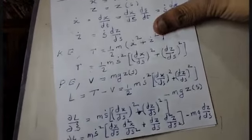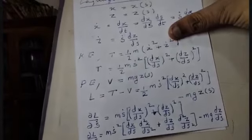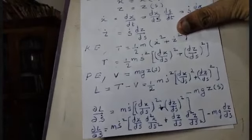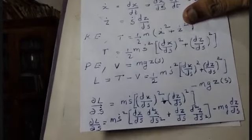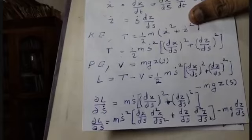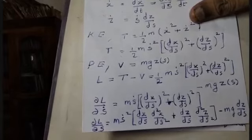Now we apply the Lagrange equation. The generalized coordinate qj is s.